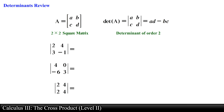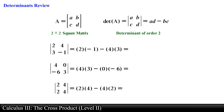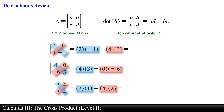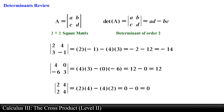For example, the determinant of a matrix can be found by first multiplying the diagonal entries that move down from left to right and subtracting the product of the entries that move downward from right to left. Notice that the determinant can be positive, negative, or zero.